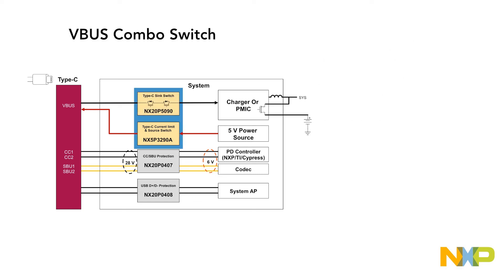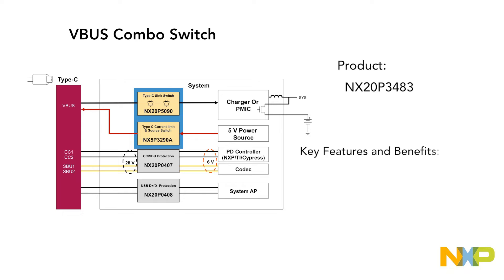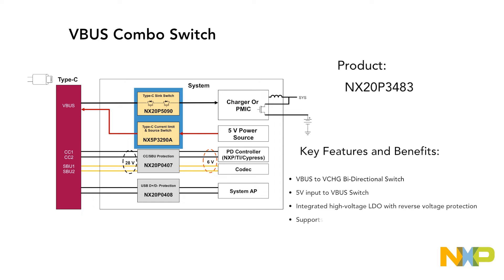The VBUS combo switch — the NX20P3483 — is a 2-in-1 chip integrating a Type-C sync switch with a Type-C current limit and source switch, delivering both VBUS overvoltage protection and VBUS overcurrent protection. The NX20P3483 comes with a VBUS to VCHG bidirectional switch, a V5V to VBUS switch, an integrated high voltage LDO with reverse current protection, and OVP, OCP, SCP, RCP, and surge protections, while supporting four different I2C slave addresses.